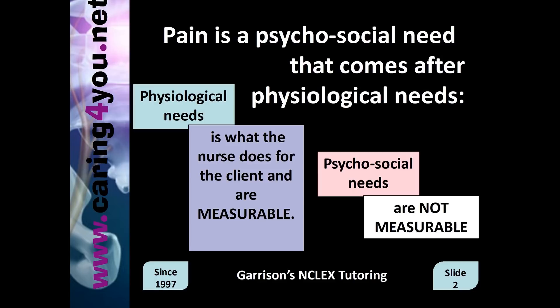What are physiological needs? Physiological needs is what the nurse does for the client and is measurable. You have a blood pressure of 160 over 90 — you know it's 160 over 90 because you took the blood pressure with a blood pressure cuff. Temp 101.5 — you know the temp is 101.5 because you took the temperature with a thermometer. So physiological needs are measurable. Psychosocial needs, which is what pain is, are not measurable. You have to rely on the individual to tell you the level of the pain on a scale of 0 to 10. You have to rely on something they said — it's not measurable.